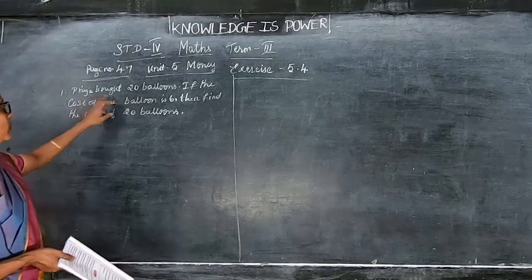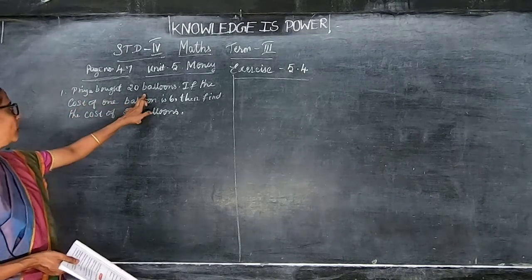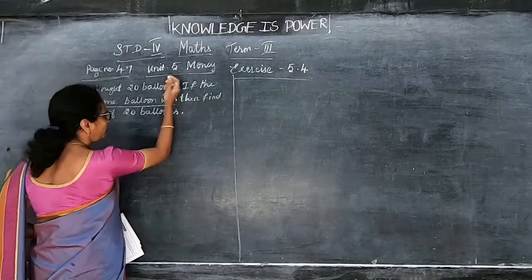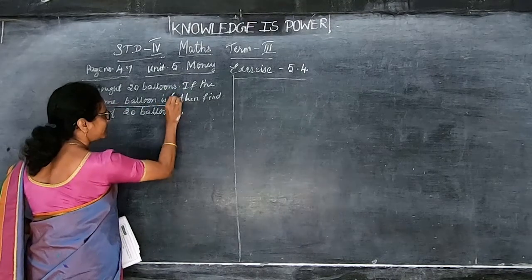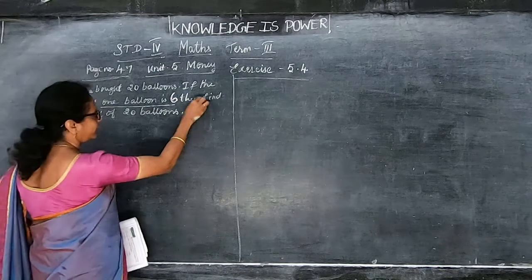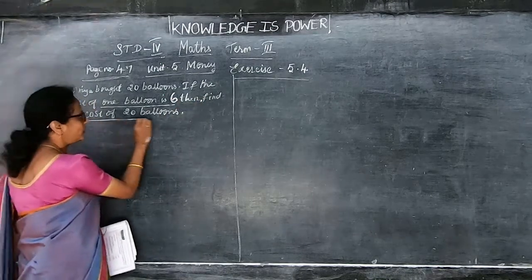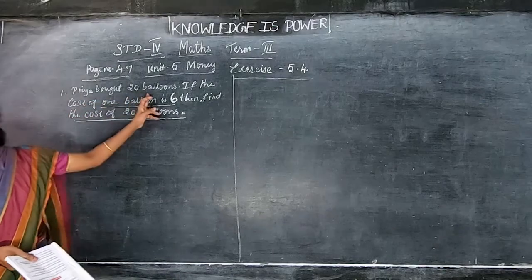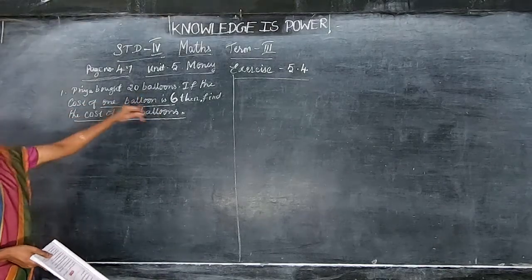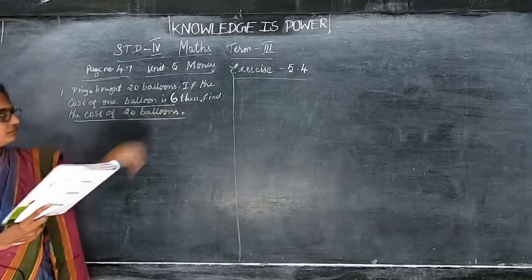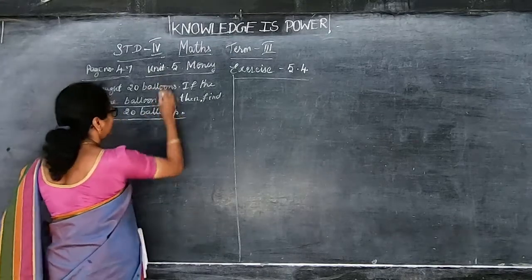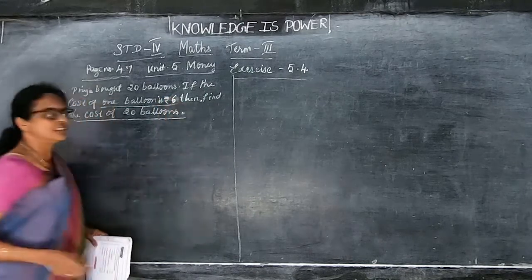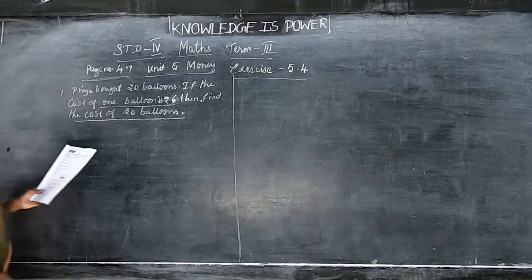Here, Priya bought 20 balloons. The cost of one balloon is rupees 6. Then find the cost of 20 balloons. So, 20 balloons — the cost of one balloon is rupees 6. Find the cost of 20 balloons.